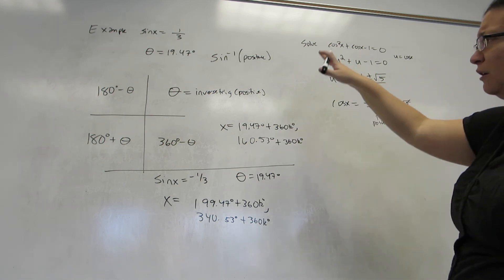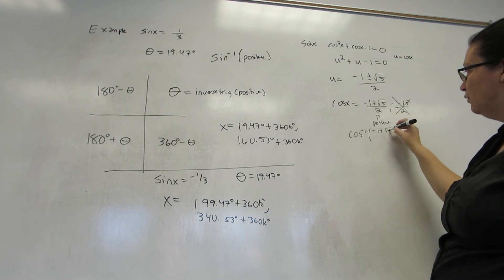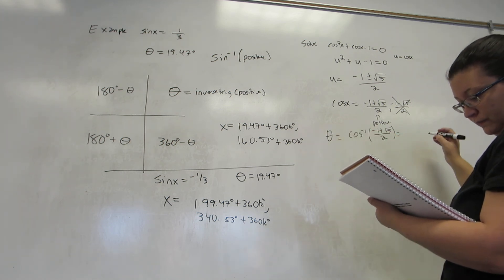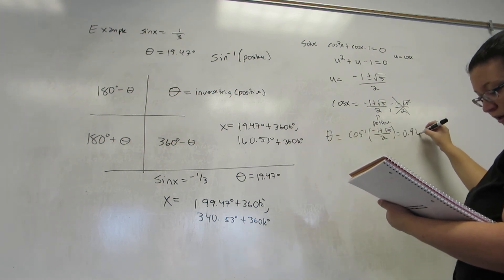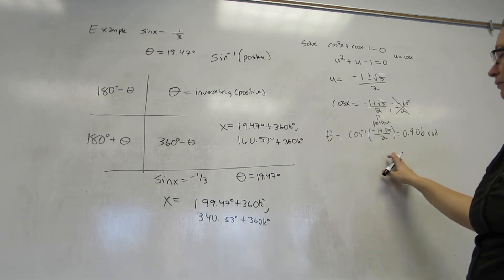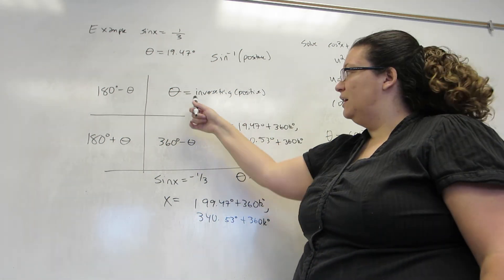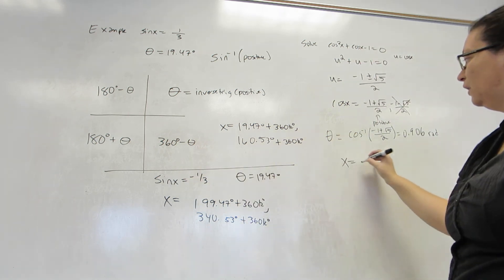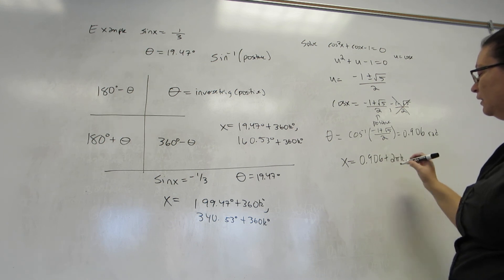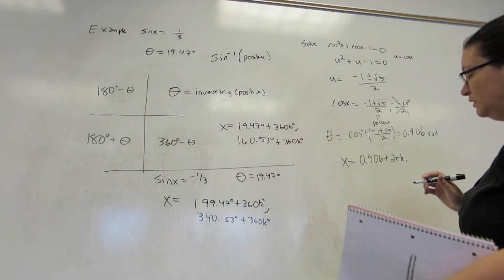So, I'm going to follow this. I'm going to plug into my calculator cosine inverse of the positive version, which is just that number. This is my theta. And I get 0.906. And this time, I did it in radians. Now, cosine is positive here. I say which two quadrants is cosine positive in? Answer is first and fourth. So, my answer for x will be the first quadrant answer, plus 2 pi k, and the fourth quadrant answer, which is 2 pi minus theta, since I'm doing radians.